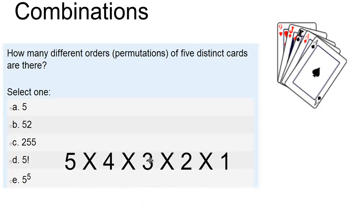And of course, if you remember your permutations, it's 5 factorial — 5 times 4 times 3 times 2 times 1. There are five different ways to choose the first card, 4 to choose the second, 3 to choose the third, 2 to choose the second last one, and one way to choose the final one. So 5 factorial.